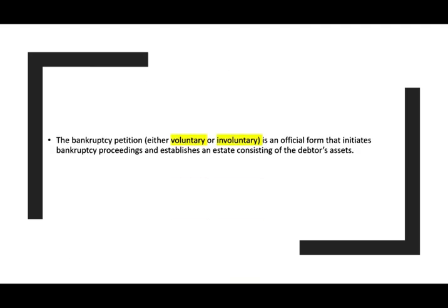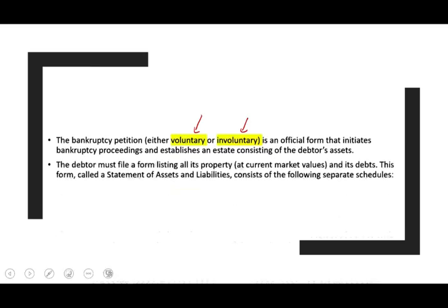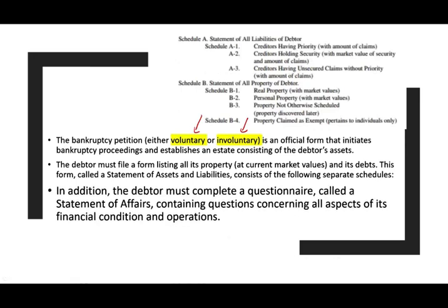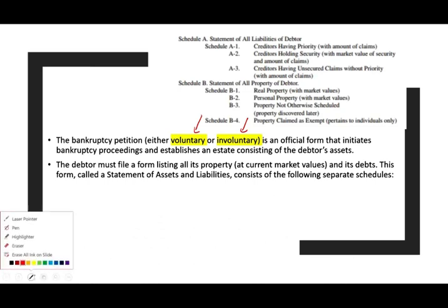The bankruptcy petition is an official form that initiates the bankruptcy proceeding. You could initiate this voluntarily — the business can start it itself — or the creditor can do so involuntarily. The debtor must file a form listing all property at current market value and all liabilities at current market value. This form is called the Statement of Assets and Liabilities.